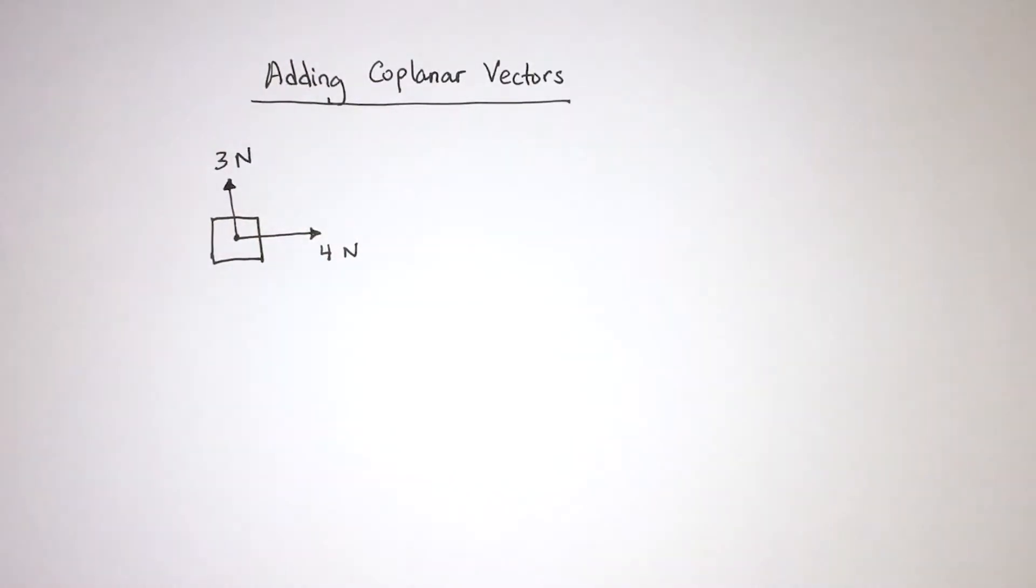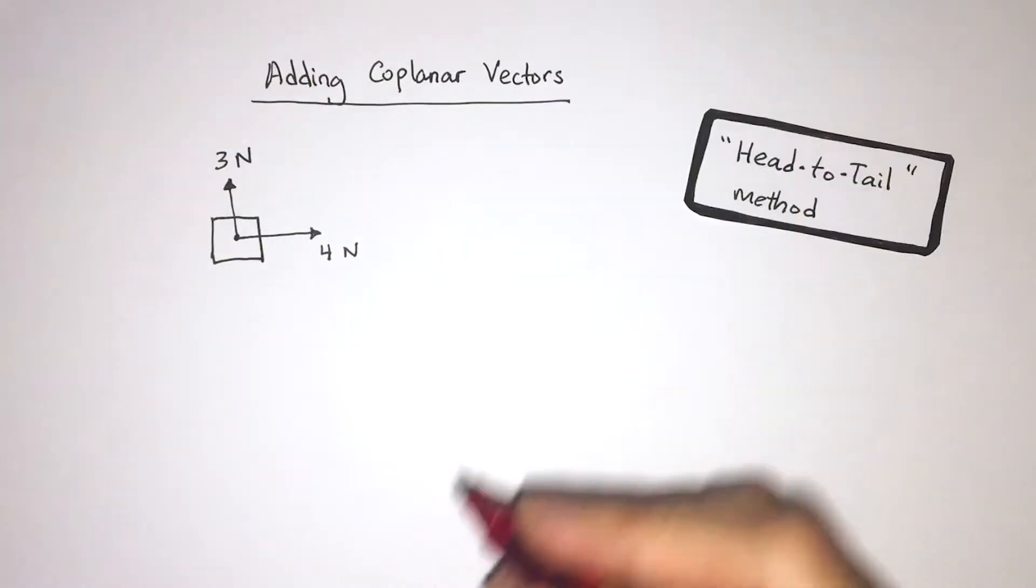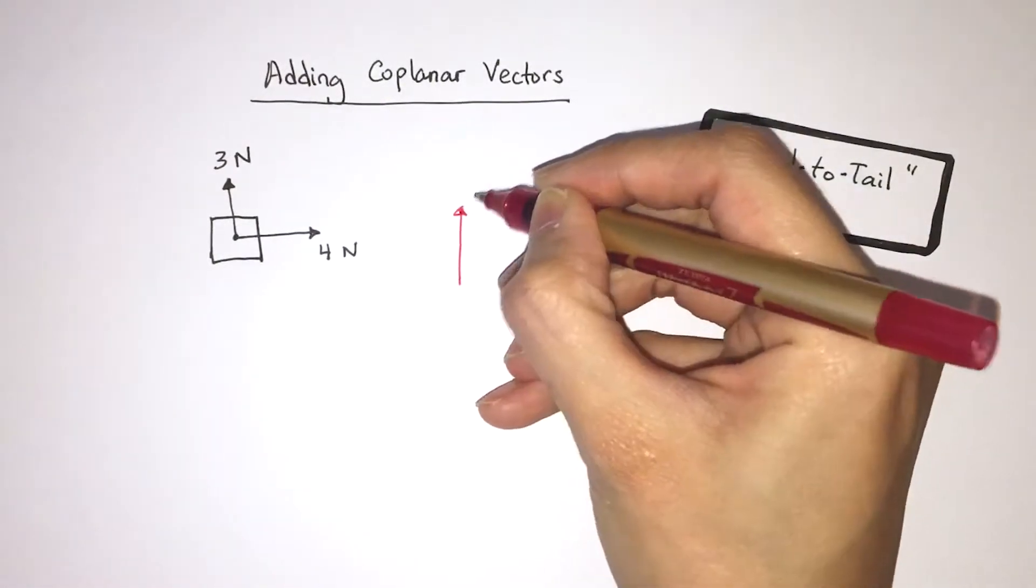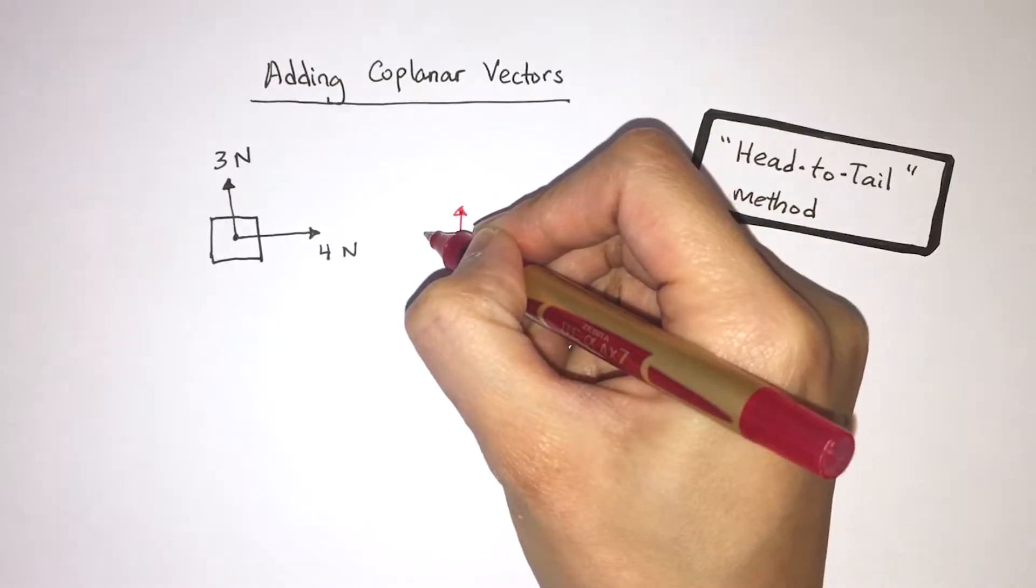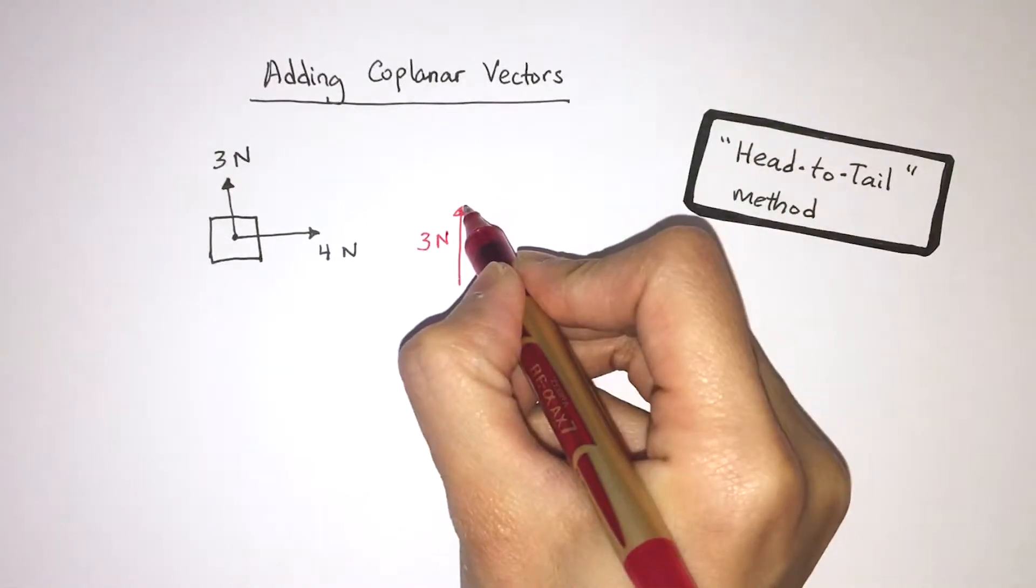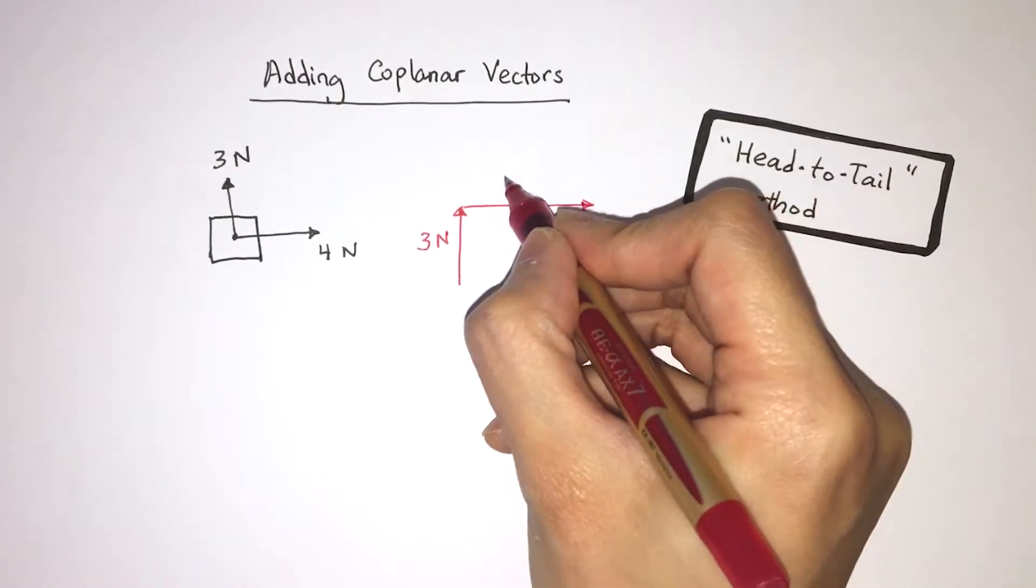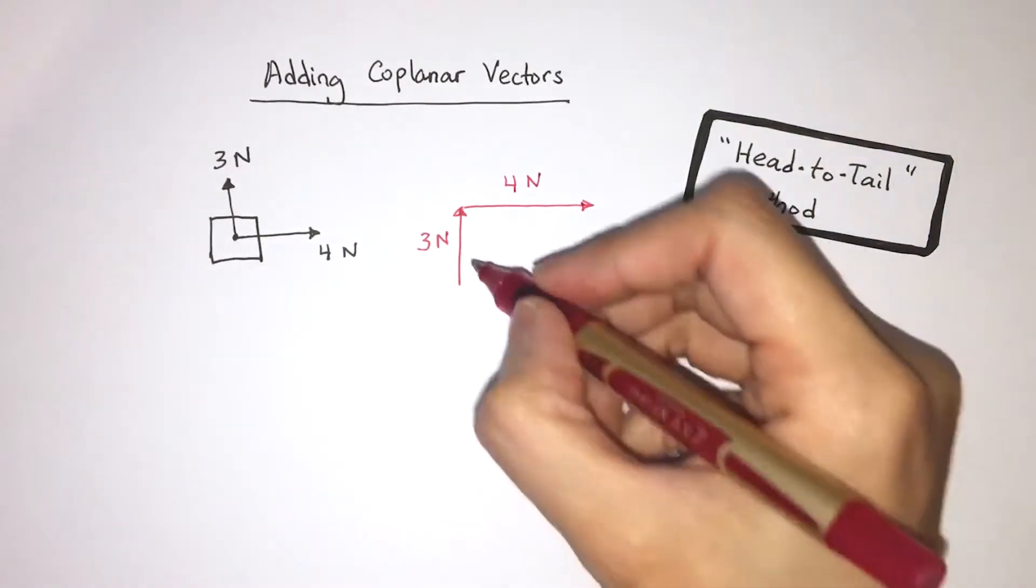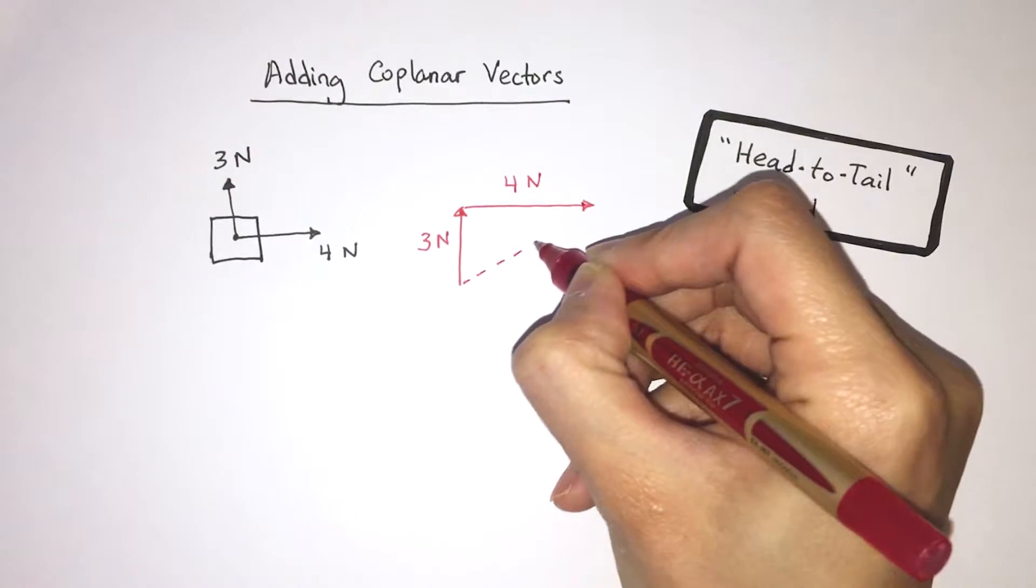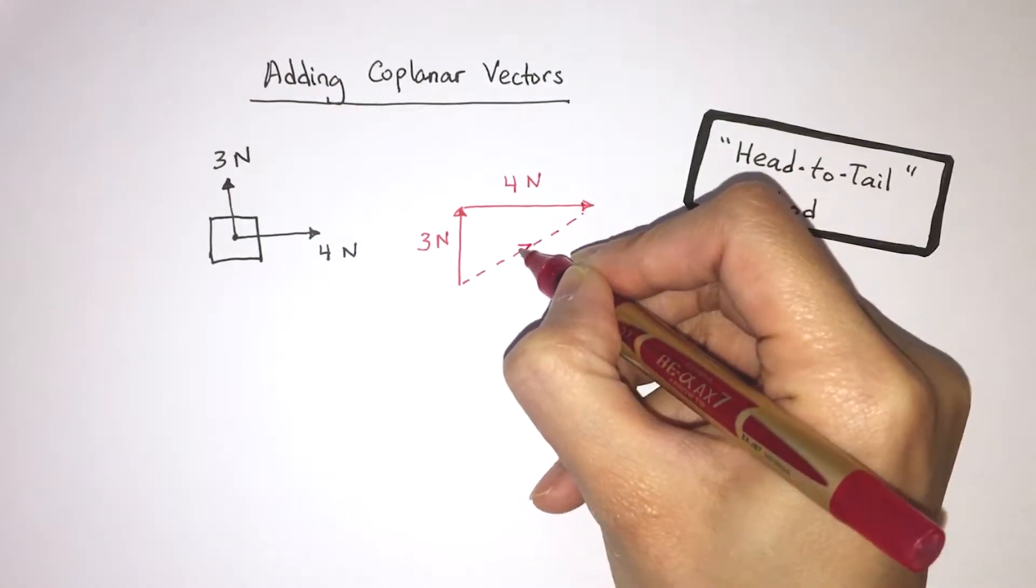We're going to use the method known as the head to tail method. I'm going to draw the 3 newtons force first. Take the end of the 4 newton arrow and attach it to the head of the 3 newton arrow. Then I'm going to complete this triangle with a dotted line, and the dotted line is my resultant force of these two forces.